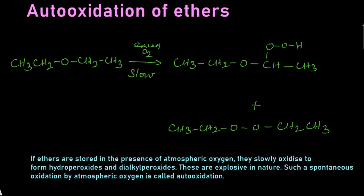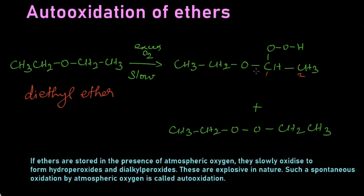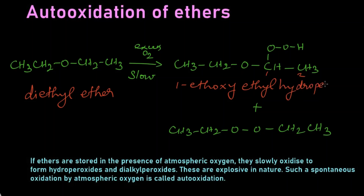Let us write the names for the structures. This first compound is diethyl ether where the first carbon has one ethoxy group attached — so it is called 1-ethoxyethyl hydroperoxide. The name of the second compound is simply diethyl peroxide.